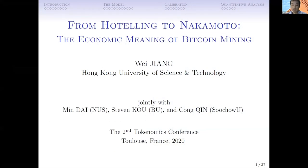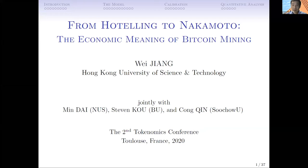First, I'd like to thank the organizers for including our paper in this great conference. I'm Wei Jian from Hong Kong University of Science and Technology. This is joint work with Ming Dai from NUS, Stephen Ko from Boston University, and Chongqing from Suzhou University. Our talk is about economic mining. As Nakamoto - the name in our title - is the designer of the Bitcoin system, he mimicked gold mining or natural resource mining to design the supply in the Bitcoin system. What we do is leverage the classic Hotelling model for natural resource mining to investigate Bitcoin mining.